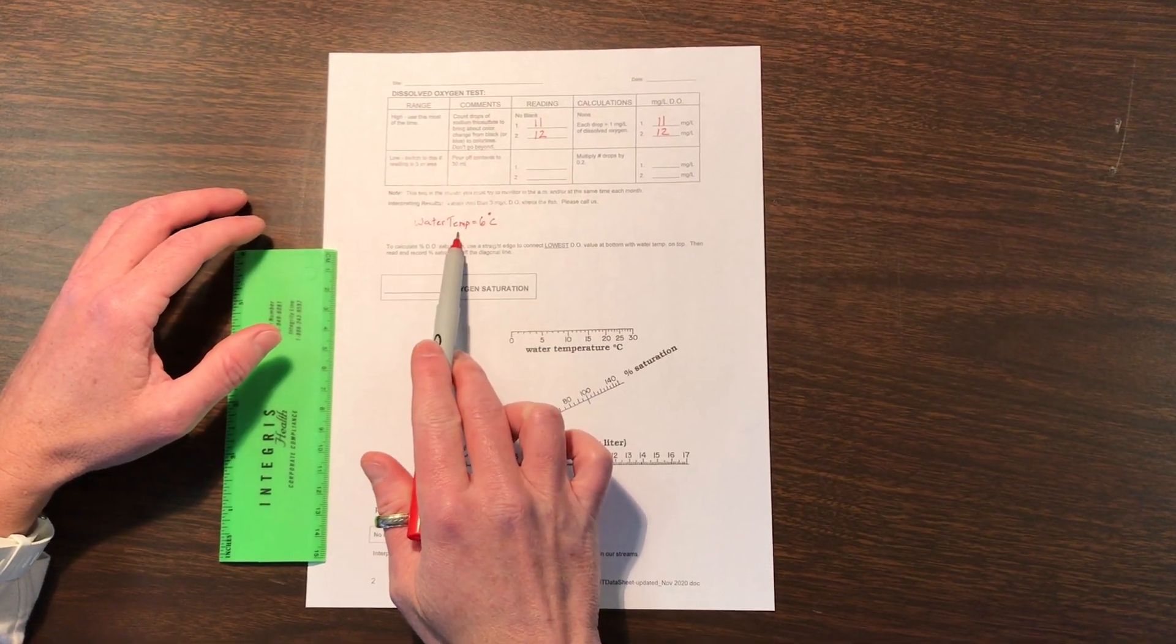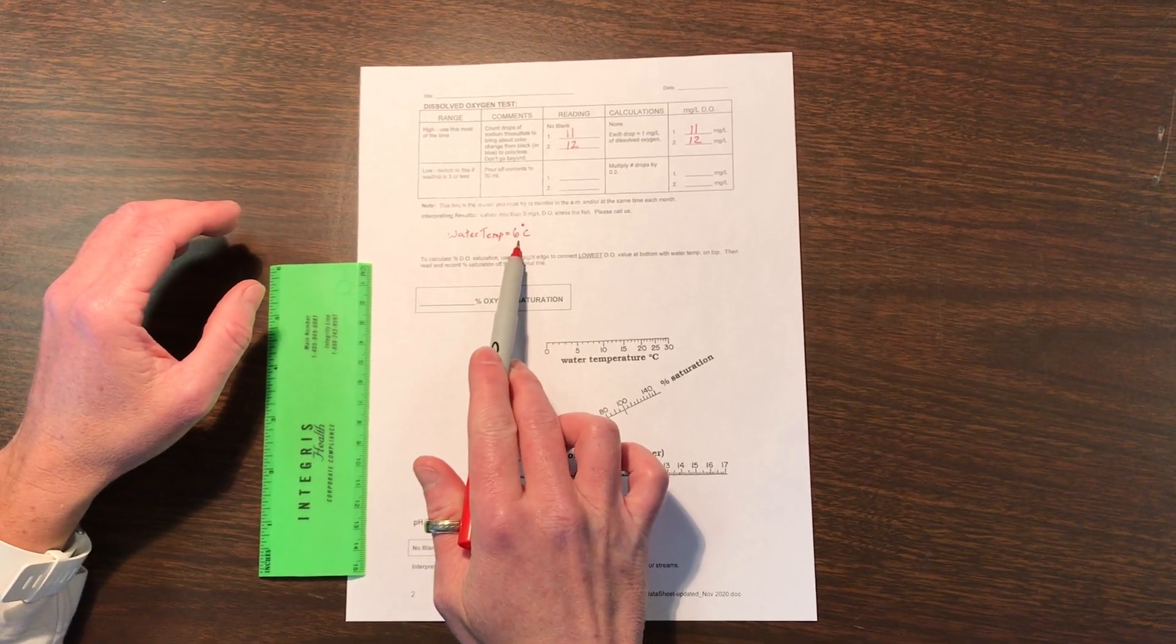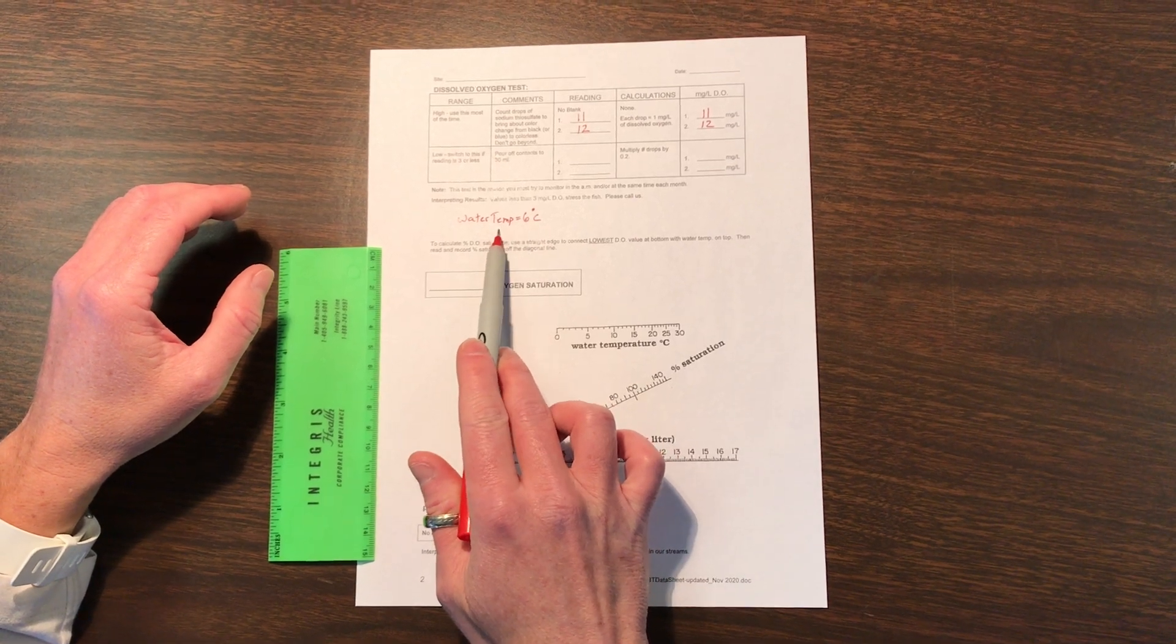This would be recorded on the front page of the data sheet, but I went ahead and just wrote it down here. Let's say that we have 6 degrees as our water temperature.